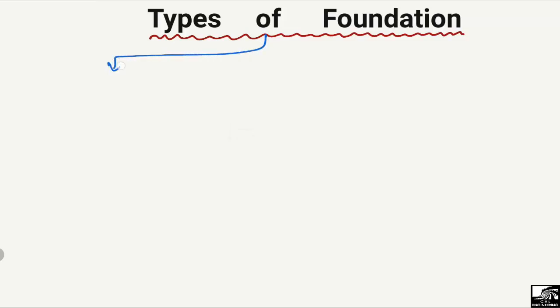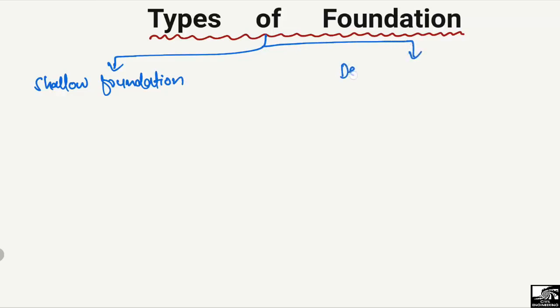Generally speaking, we have two main types of foundation: the shallow foundation and the deep foundation. The name shows that deep foundation is a type where we have more depth compared to the width of the foundation, while shallow means the foundation is at a shallow surface — the depth of the foundation is lower than the width.